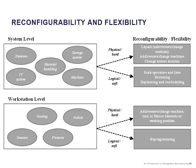The same concepts apply at the workstation level, which is composed by tooling, pallets, fixtures, and sensors. A physical hard enabler could be adding, removing, or changing machines, tools, fixture elements, or working positions. In contrast, logical or soft changes do not need to change the hardware or the physical structure of the system, but could be in terms of reprogramming. So there's a difference between how we enable change, whether it's on the physical hardware side or the logical soft side.